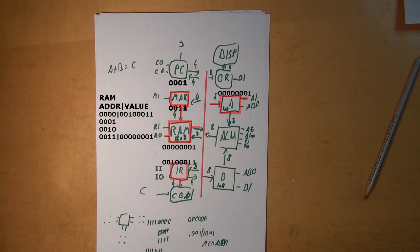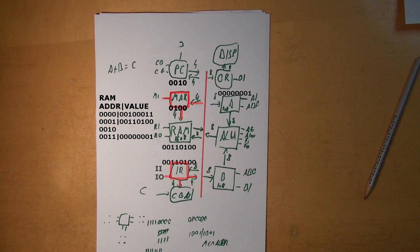Now we do the same thing for B. First: CO and MI — the MAR now points to the second instruction. Second: CE — we increment the counter. Third: RO and II — the instruction is transferred to the instruction register. The instruction this time is 0011, which means load B. Fourth step: IO and MI — this memory address points to 0100, which is where B is stored. Fifth step: RO and BI — the number B is transferred from RAM to the B register.